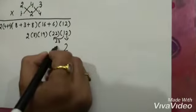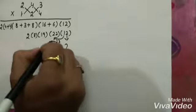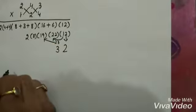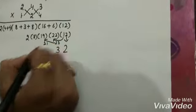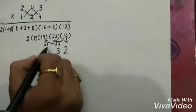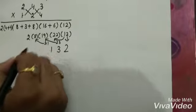So this 3 we will write here. Remaining 2 is added to 19. It becomes 21. So we will write this 1 only.